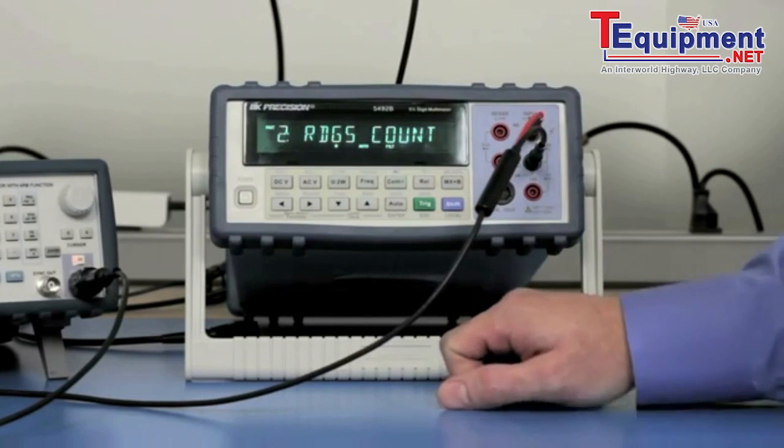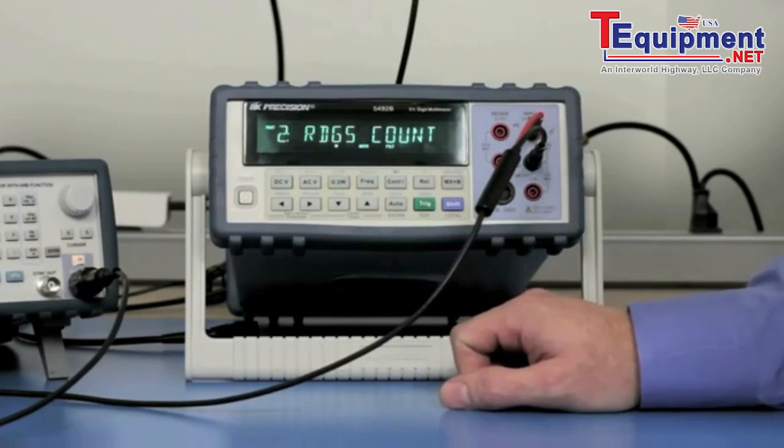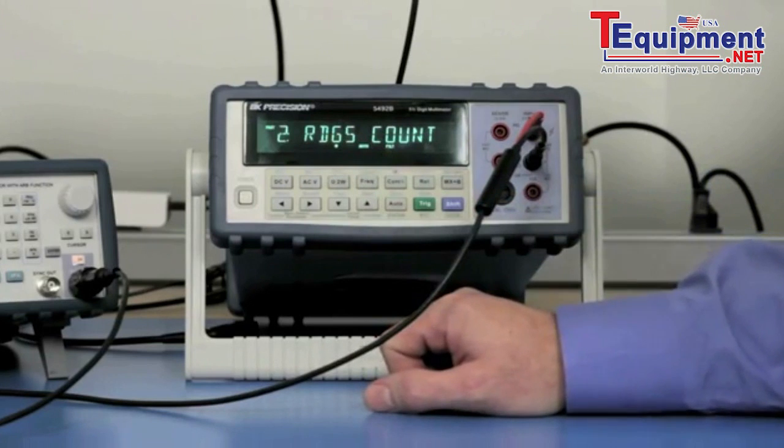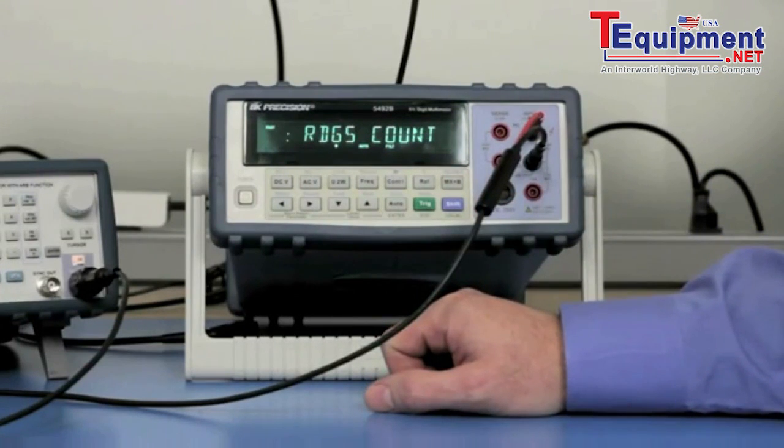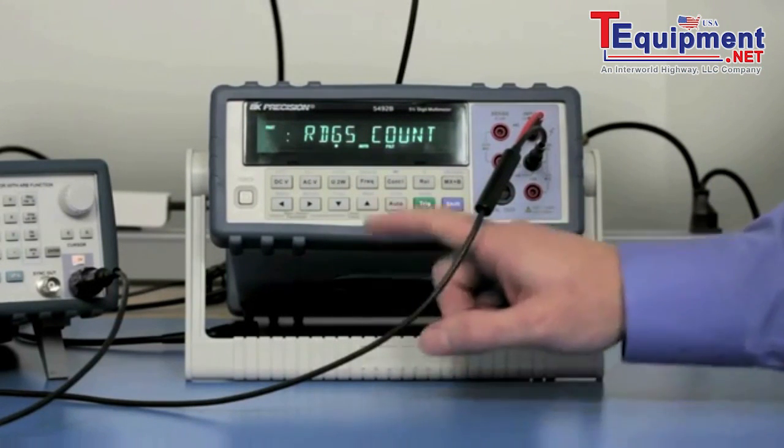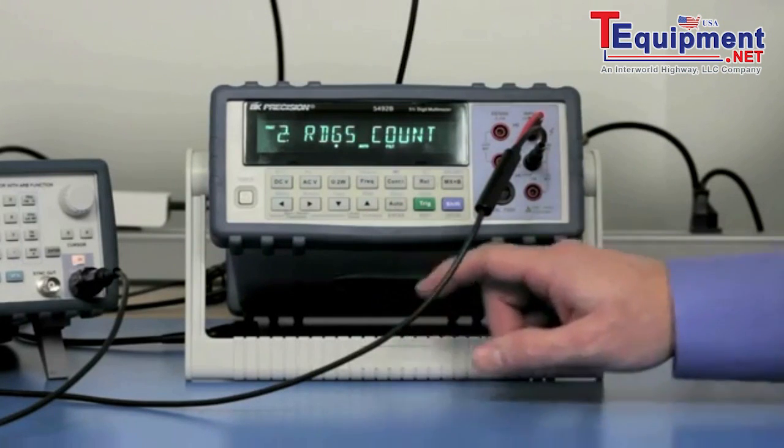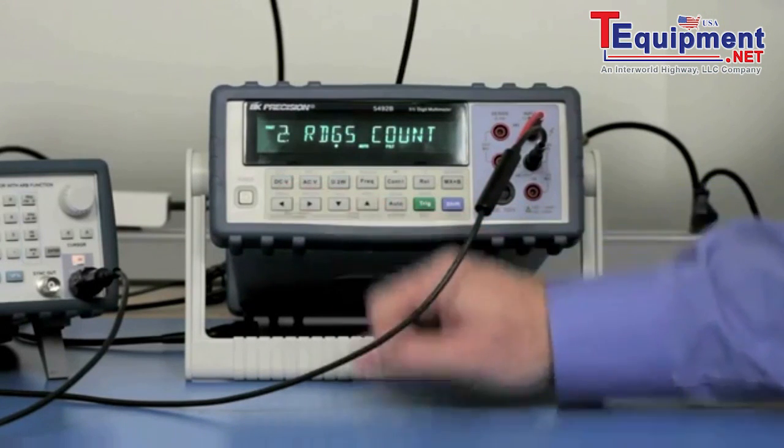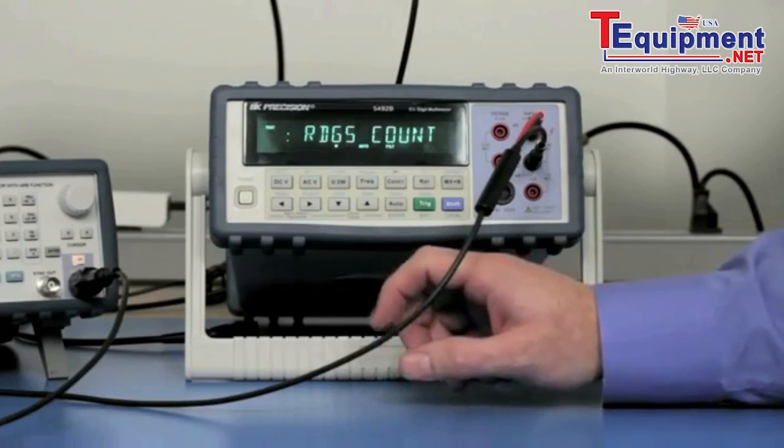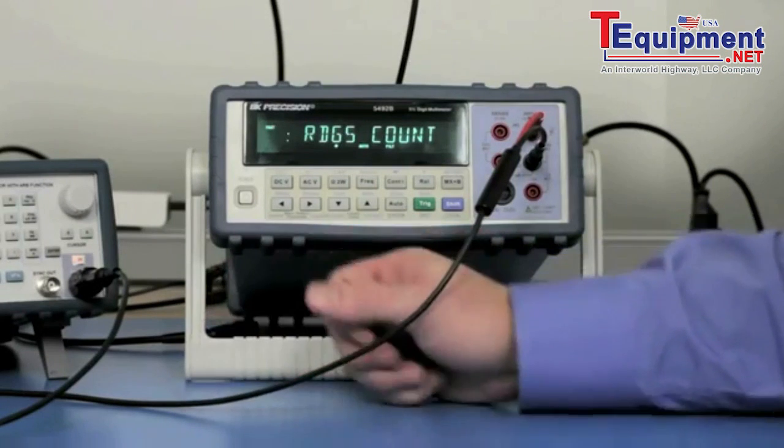Once the 5492B is in the buffer storage mode, you're going to see this little asterisk right here underneath the G telling you that it's in that mode. Now the unit is ready to go. And as soon as I press Shift-Left-Arrow, the 5492B will start to record. But before we do that, I'm going to show you how I'm going to generate the signal and what we should expect to see.